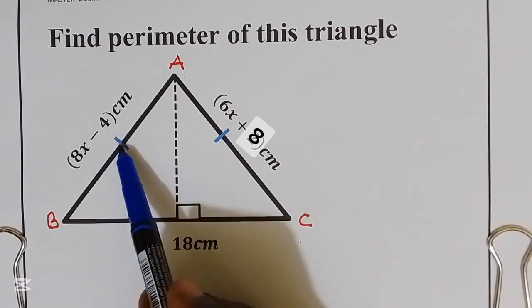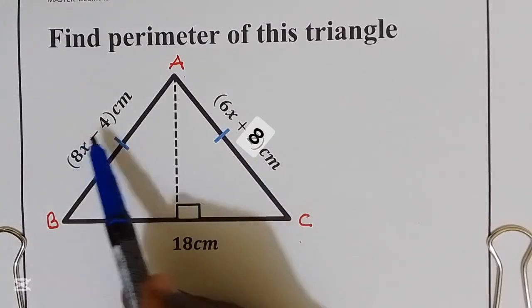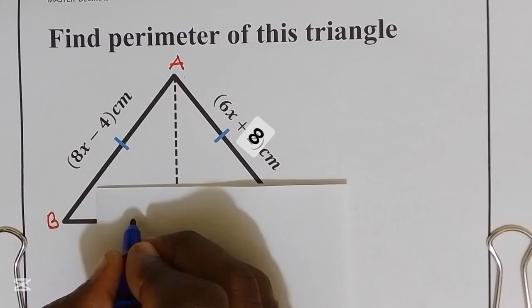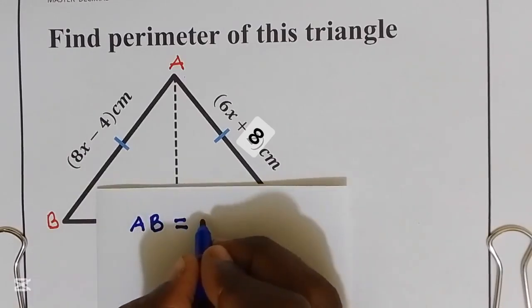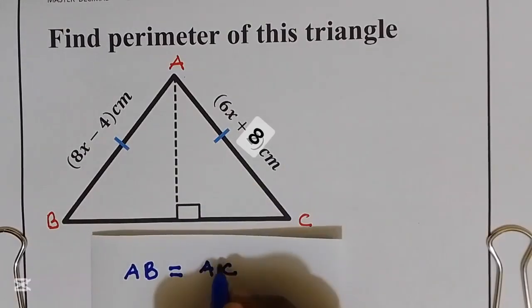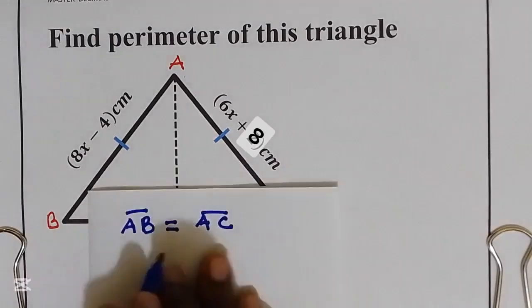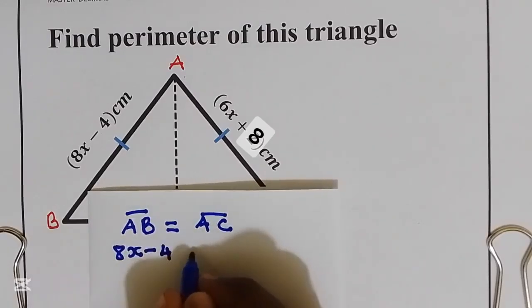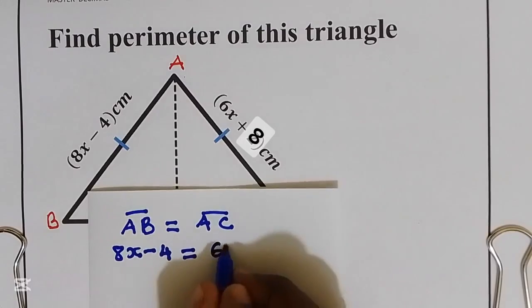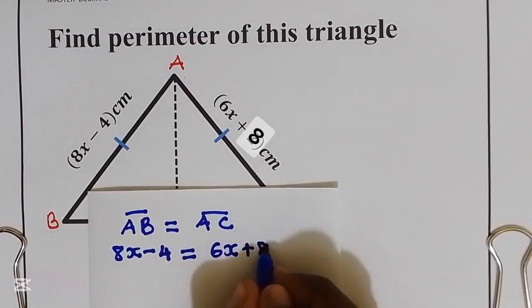So we are going to equate these two distances. Distance AB is equal to distance AC. The meaning is 8x minus 4, this is equal to 6x plus 8.